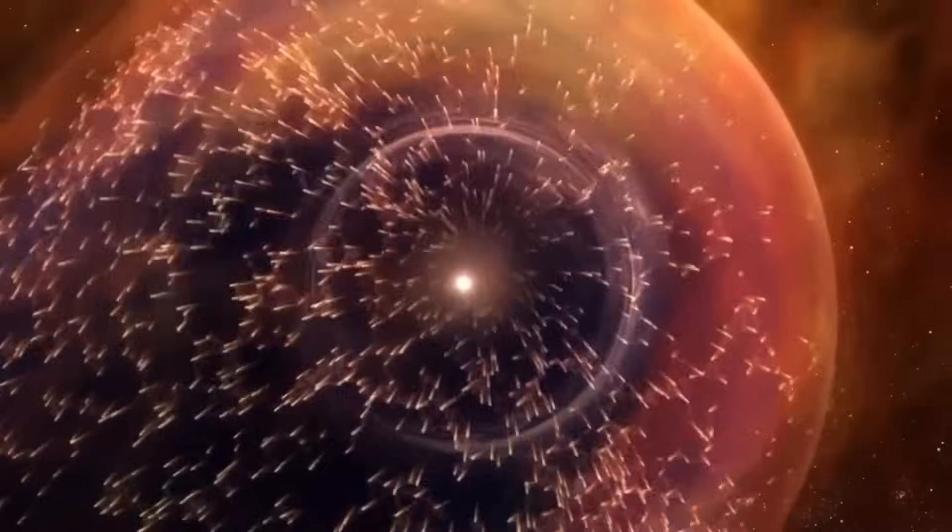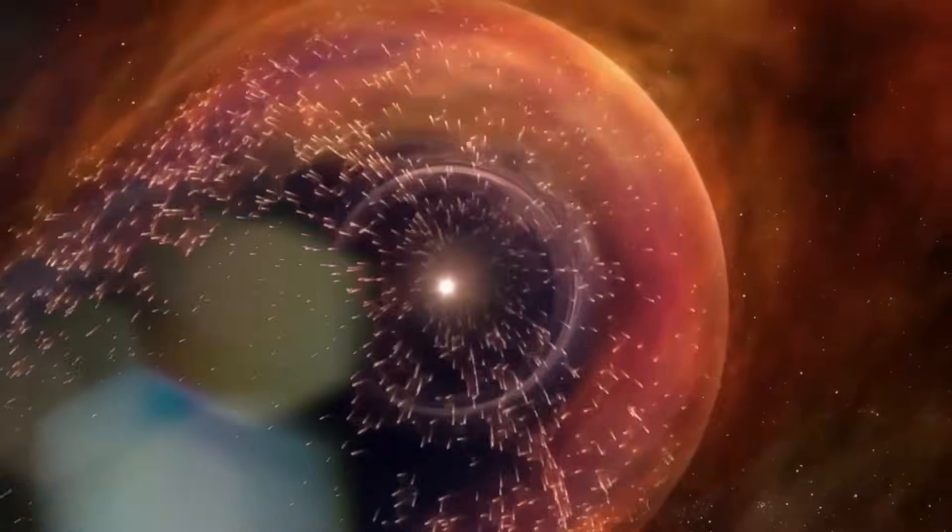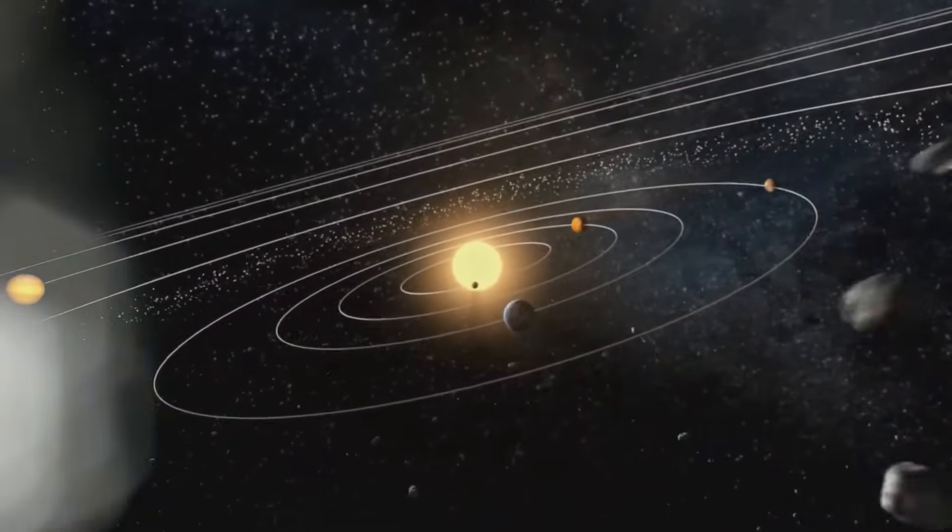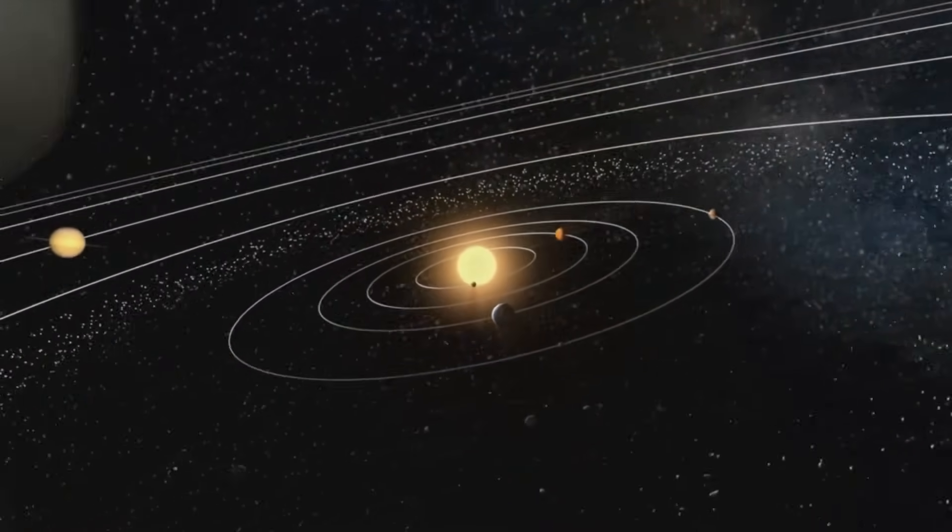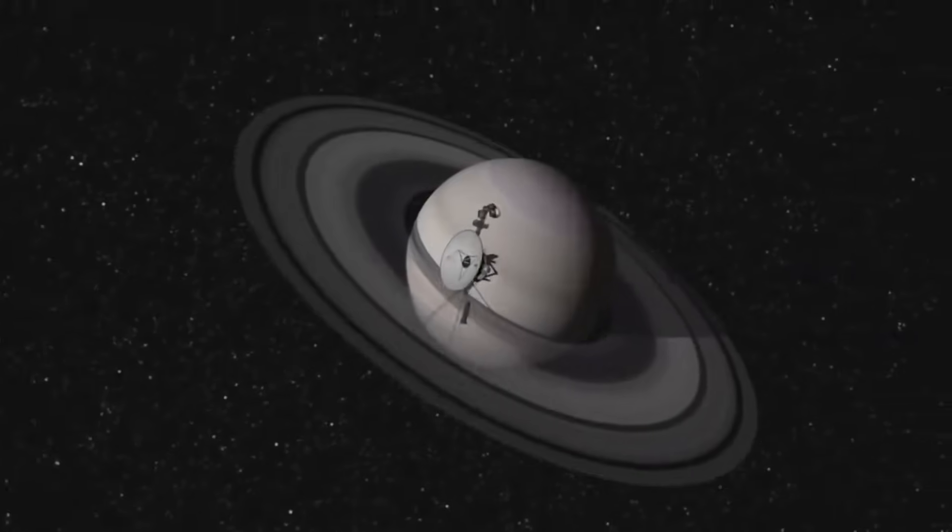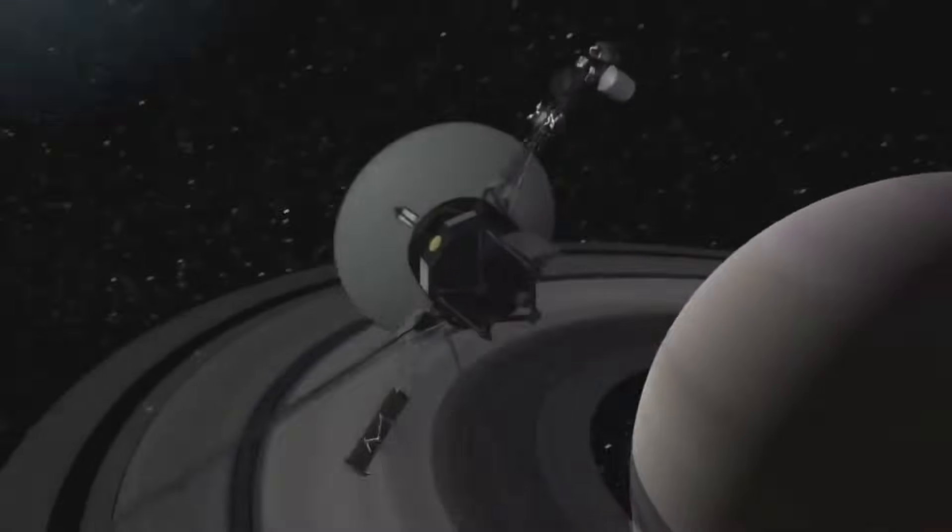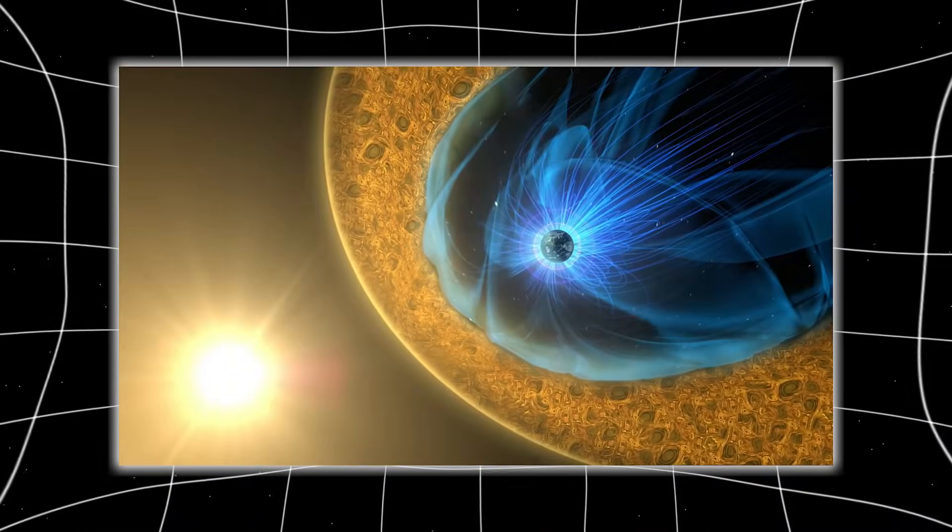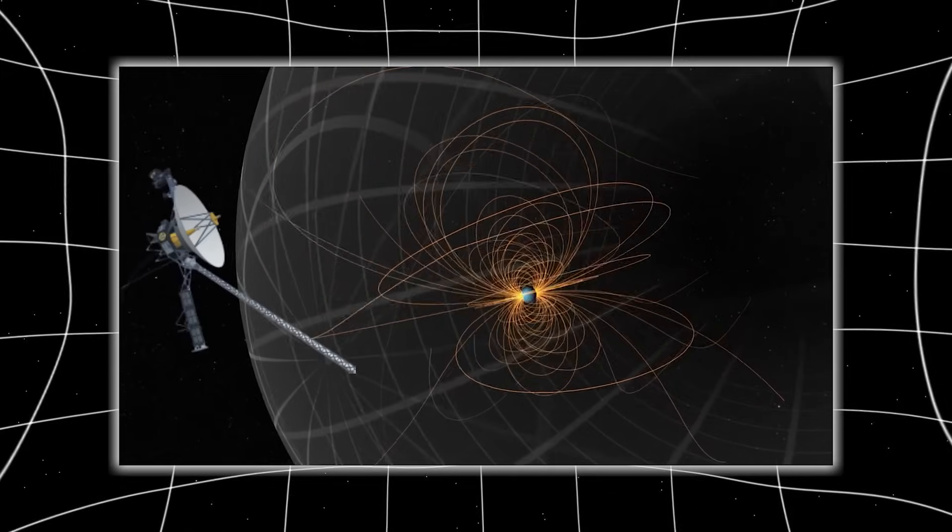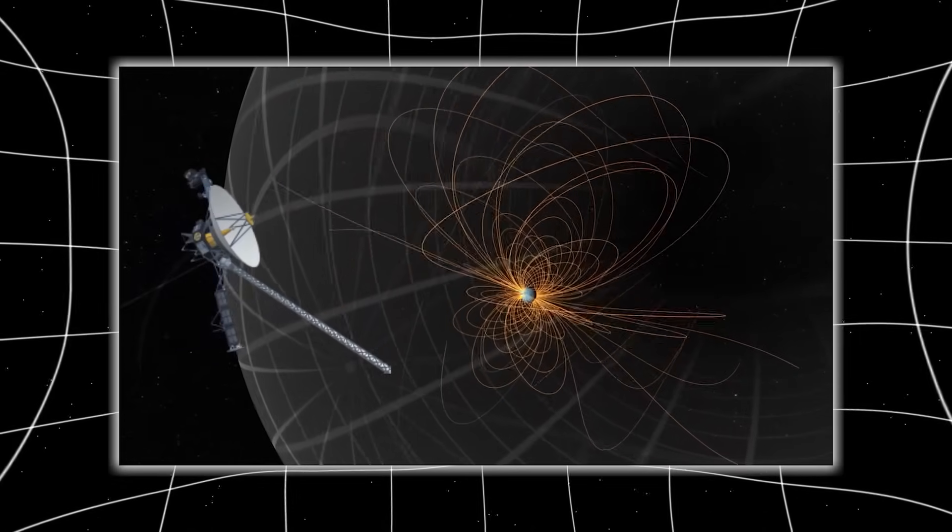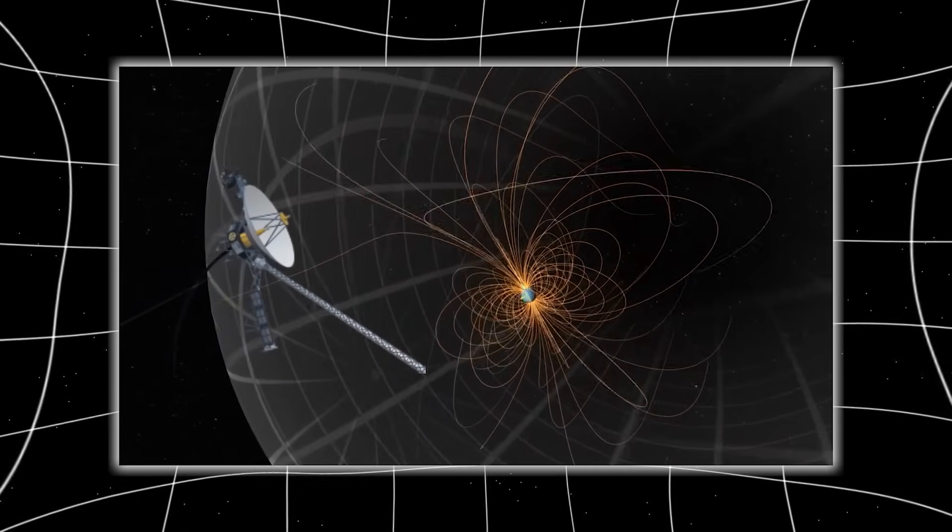Then comes the most unsettling question of all. If this transmission is real, if Voyager didn't just break, but was changed, what does it mean for the rest of space? Could other probes encounter the same? Could humans, as we push farther out, run into whatever this is? And is the silence that followed a message in itself?